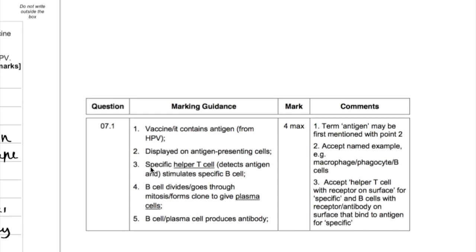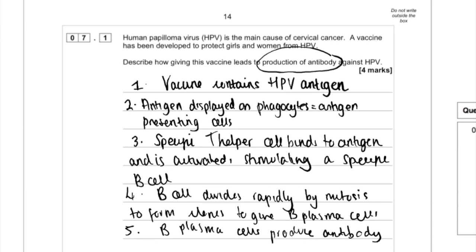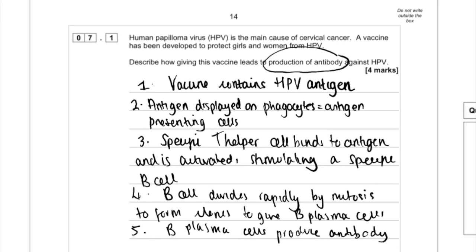All five points are on the mark scheme. Really importantly, you need to understand that these immune cells — the T cells and the B cells — are all specific, because of the receptors on their surface. Quite a lot of students went wrong on this and actually talked about memory cells, which you don't need to do.